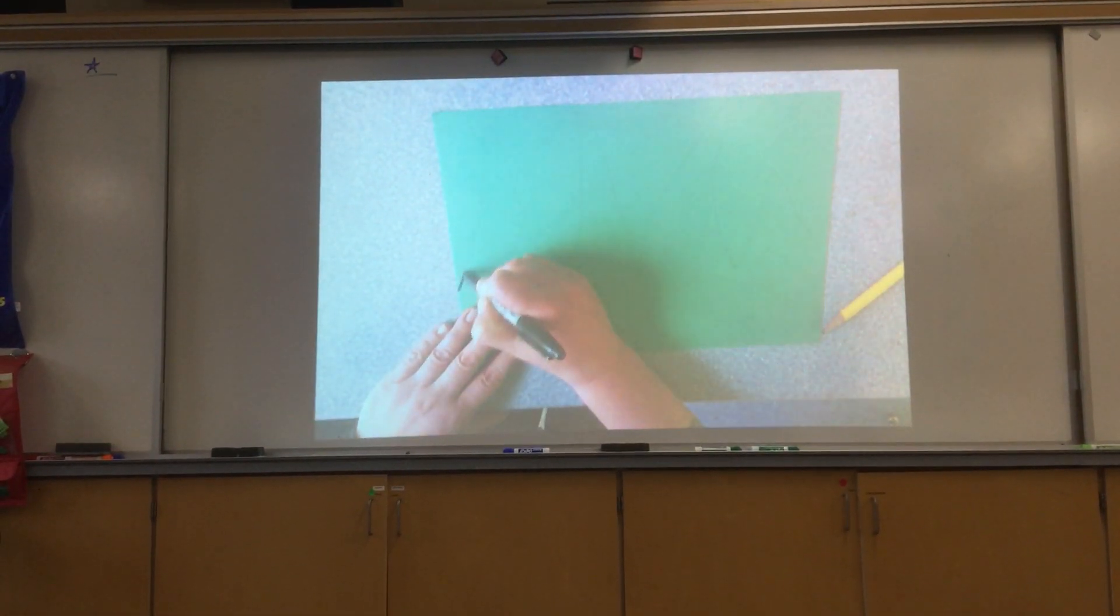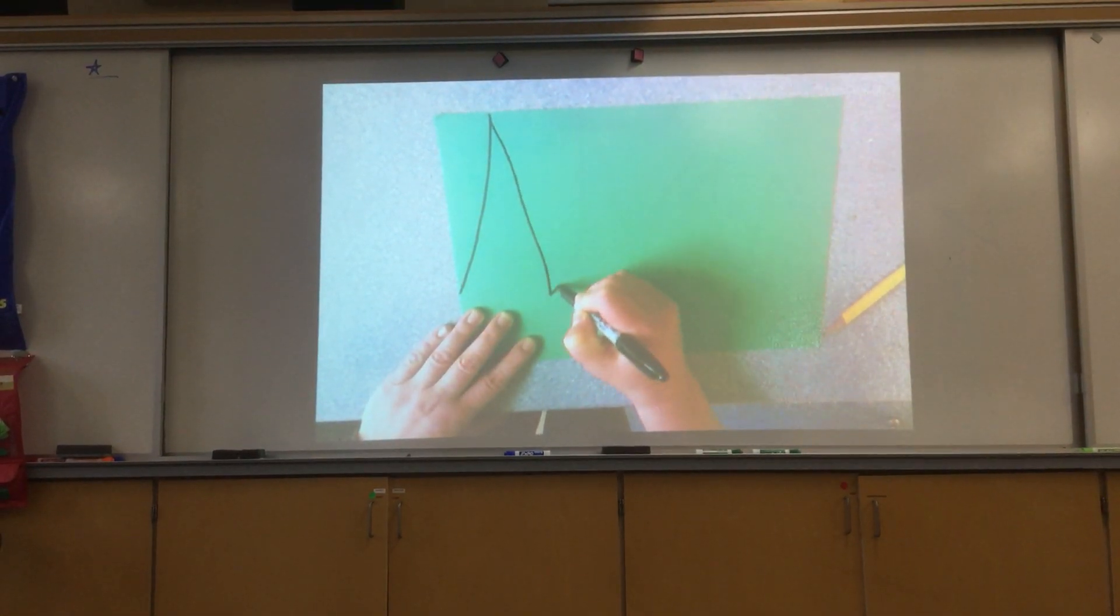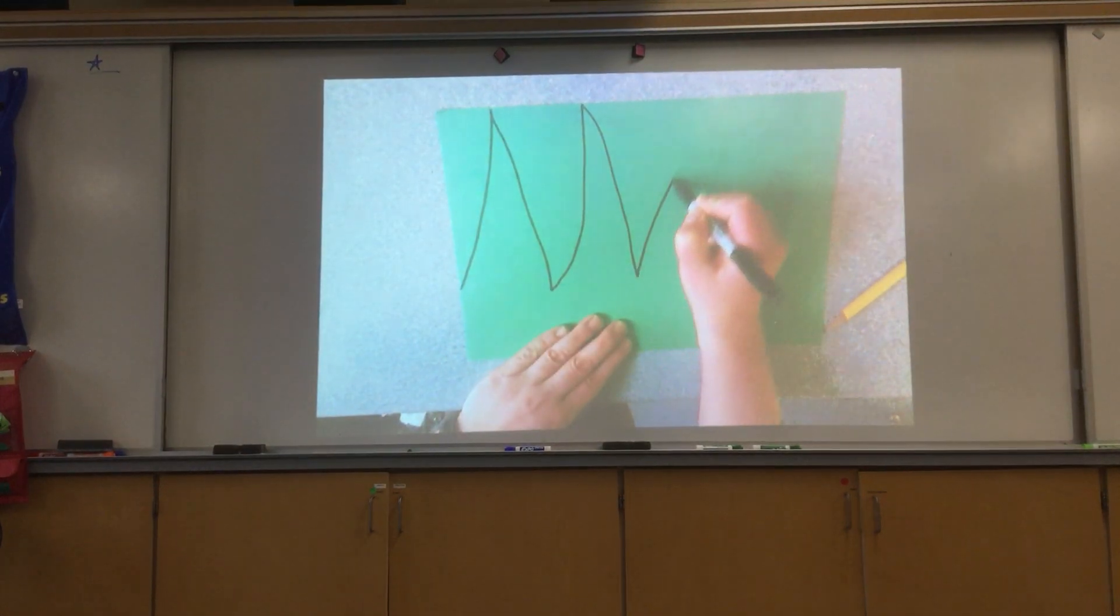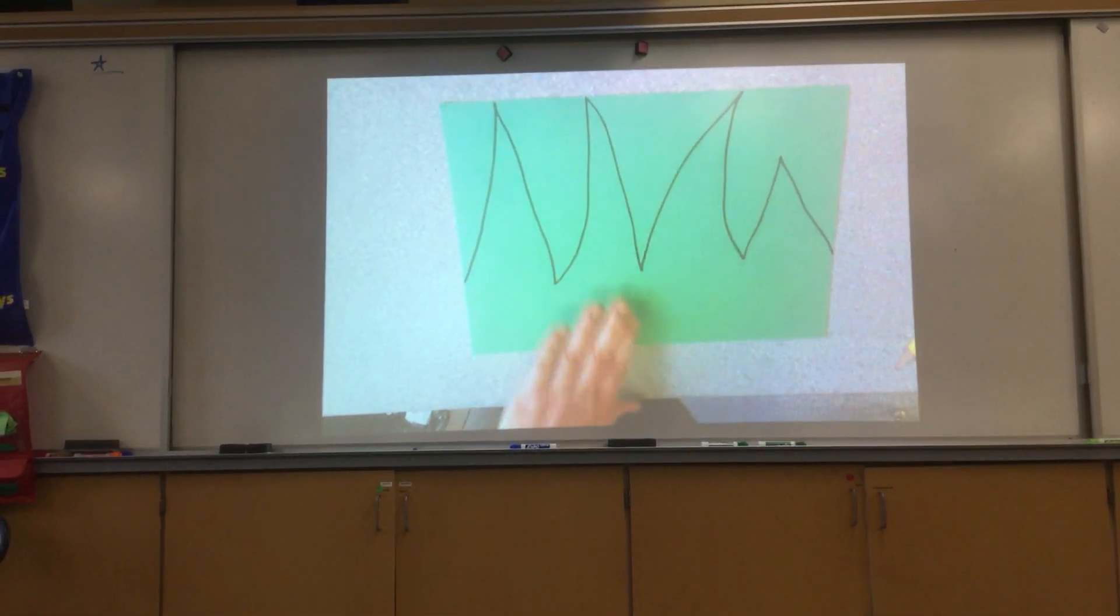Miss Kenyon suggests going over it with marker, so I'm going to go ahead and just trace over that with my black marker here so you can see. There we go. You can see I made my grass really, really tall, all the way, almost off the paper. Once you've drawn your grass, then you're going to cut it out.